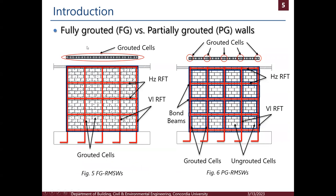Moving to the types of masonry construction, we have two main types: fully grouted and partially grouted construction. In fully grouted construction, grout is placed in all cells whether they are reinforced or not. However, in partially grouted construction, grout is only placed inside the cells with reinforcement, whether vertical or horizontally reinforced cells.